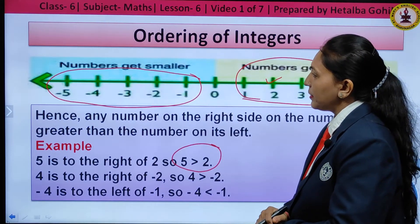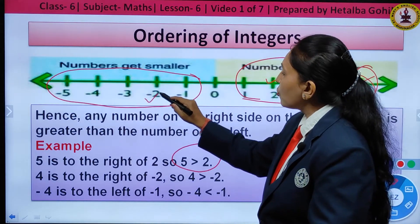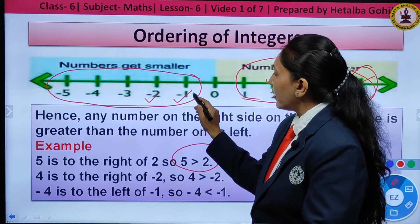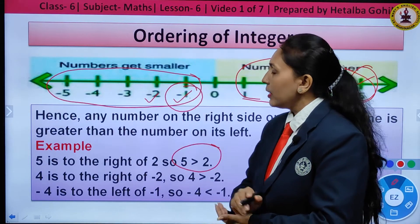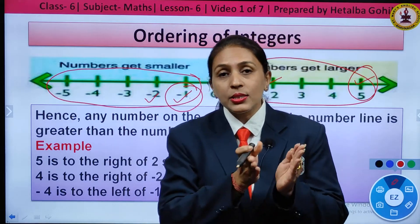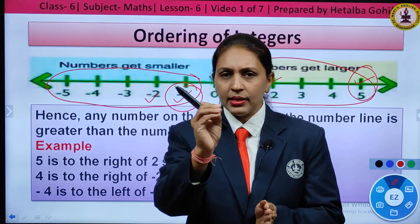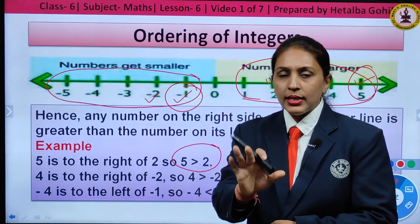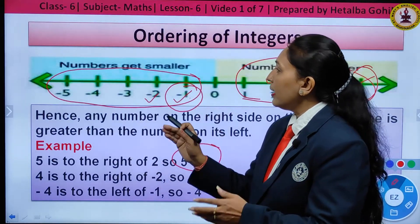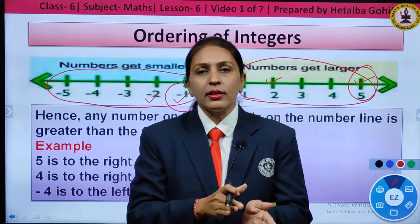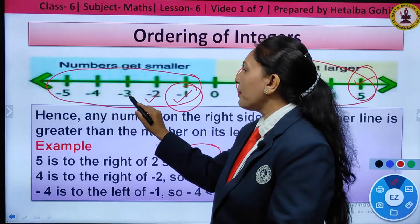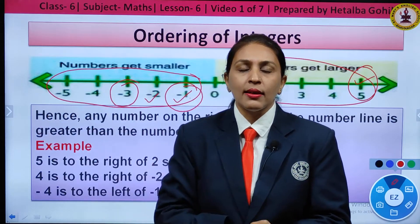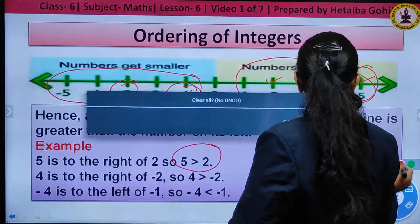Similarly for negative numbers: if I compare minus 2 and minus 1, minus 1 is on the right side, so minus 1 is greater. In negatives, the number with the smaller absolute value is always greater. For example, comparing minus 4 and minus 3, minus 3 is greater because it is on the right side of minus 4.